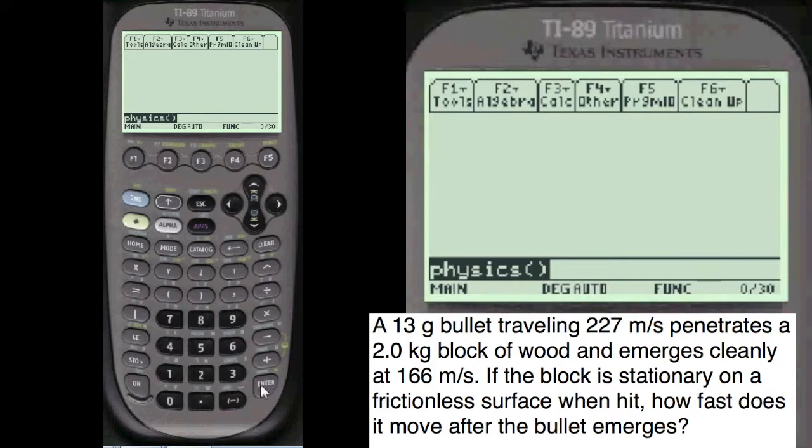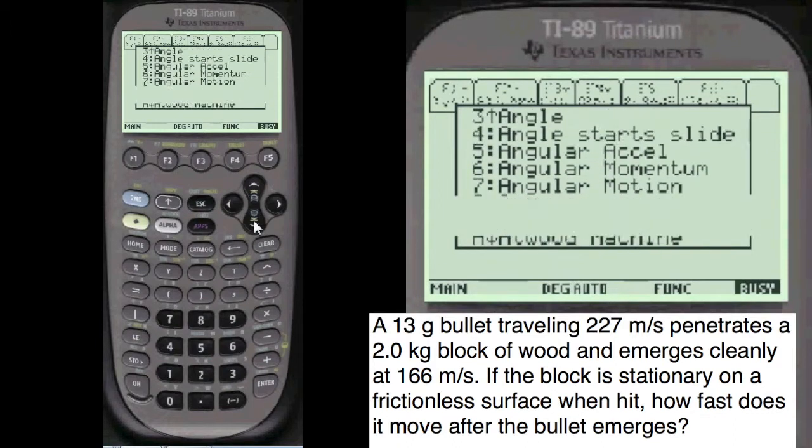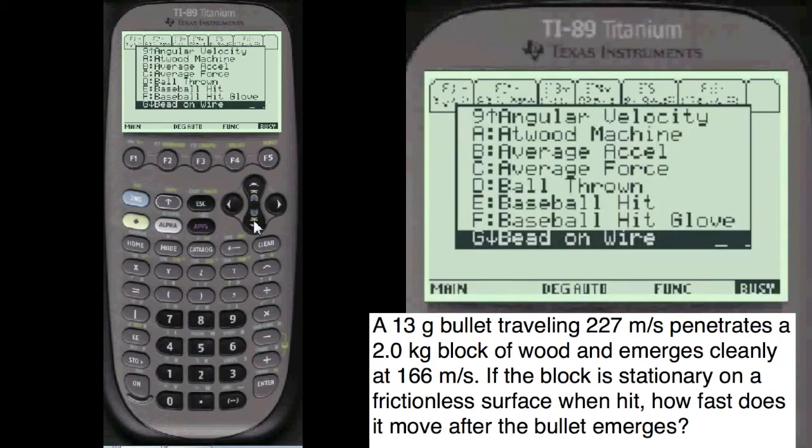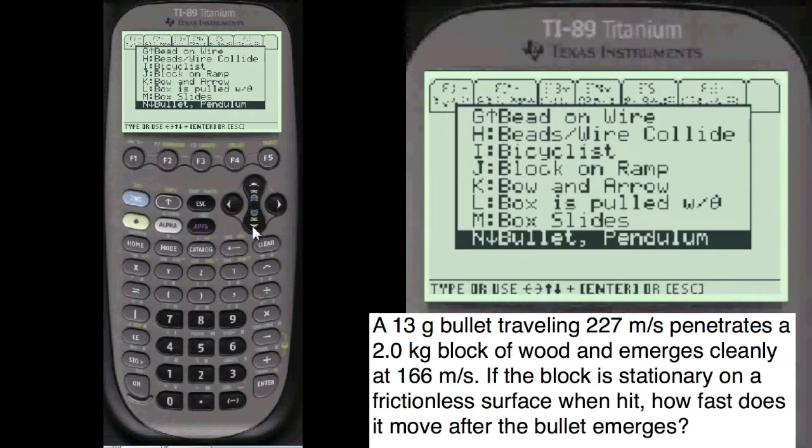Physics to get to the main menu. These numbers here, you can press these numbers and they'll go to the exact thing. I happen to know that, or you can scroll down, let's scroll down, but generally you can press the, for instance, here's N over bullet pendulum.